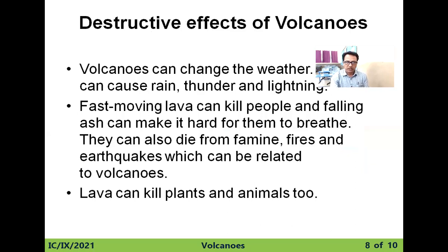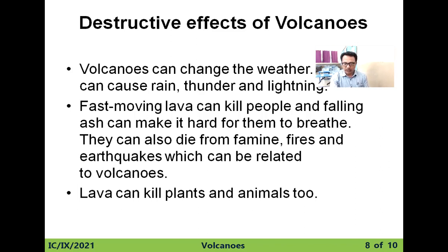Now the destructive effects of volcanoes. Volcanoes can change the weather. It can cause acid rain, thunder, and lightning. The fast-moving lava can kill people, and falling ash can make it hard for them to breathe. They can also die from famine, fires, and earthquakes which can be related to volcanoes.